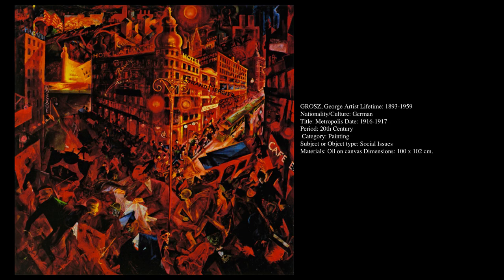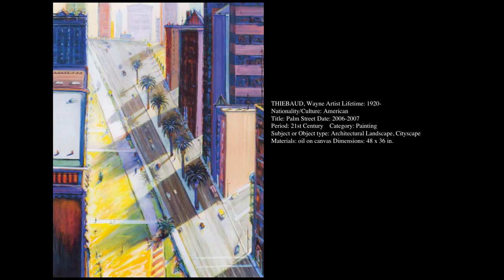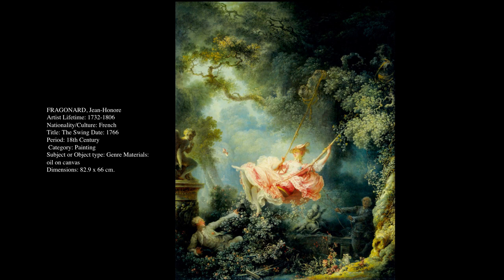George Grosz looks at the bleakness of the city, and the bold reds give a symbolism of vice and sin — almost a hell-like imagery. Compare that to Wayne Thiebaud's bright, happy, candy-like colors that are playful and give an upbeat energy. And then Fragonard's The Swing shows frolicking in nature with a beautiful pink dress surrounded by lush greens — a kitschy depiction of joyful life in the French court during the days of the monarchy.